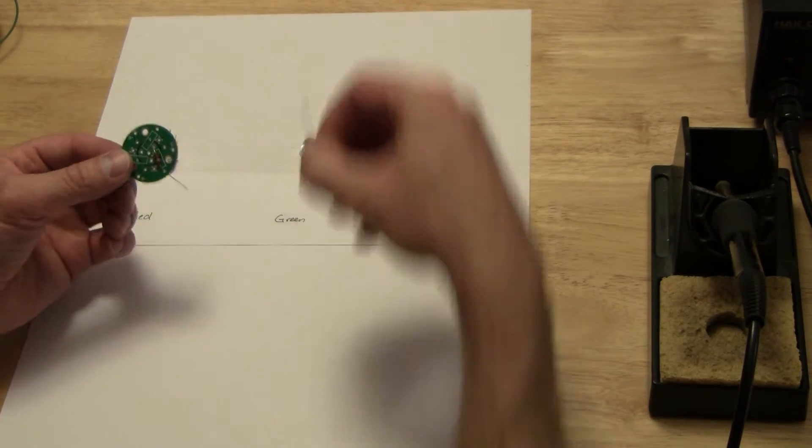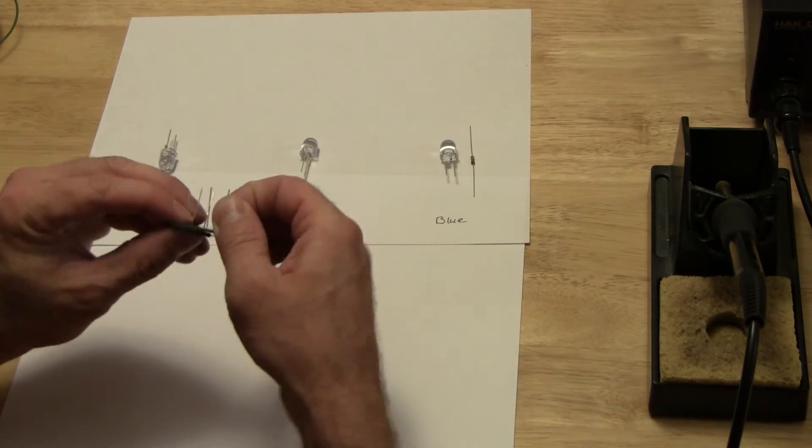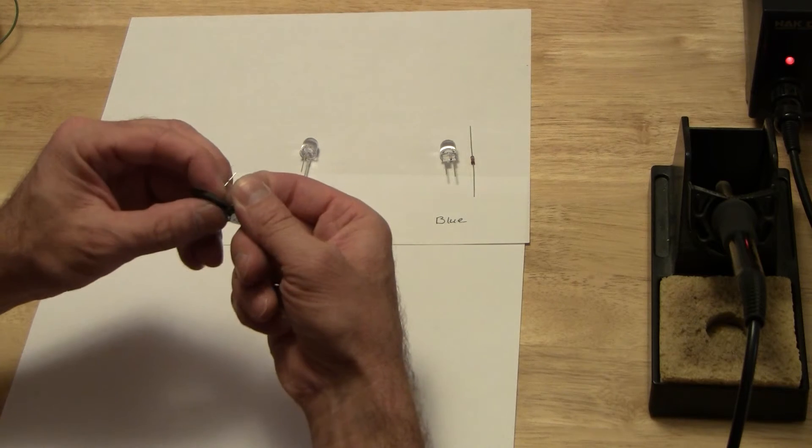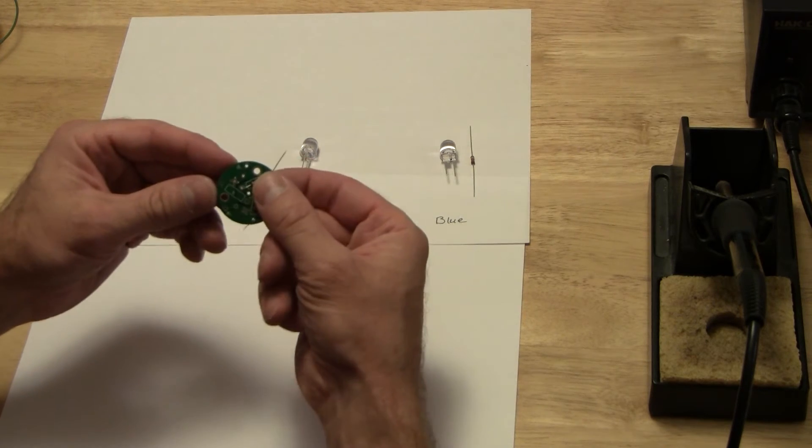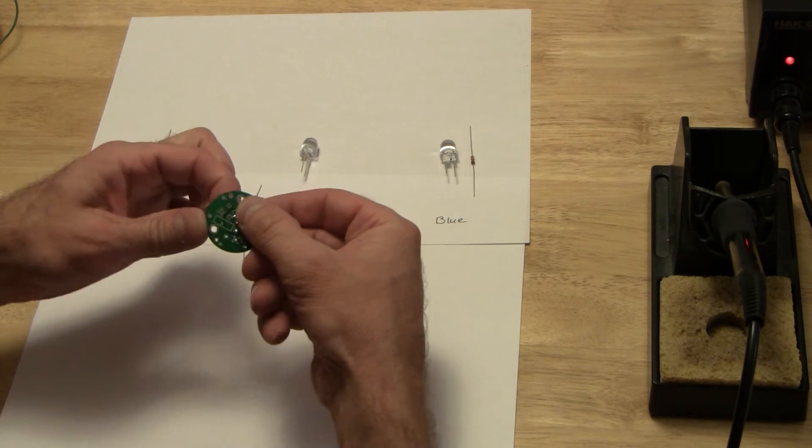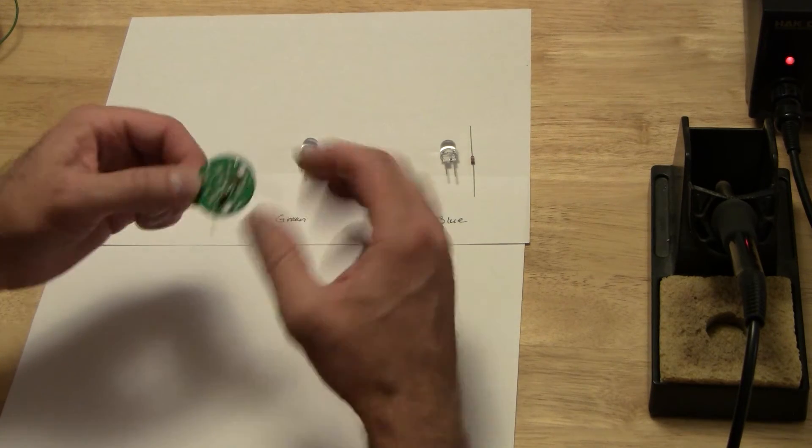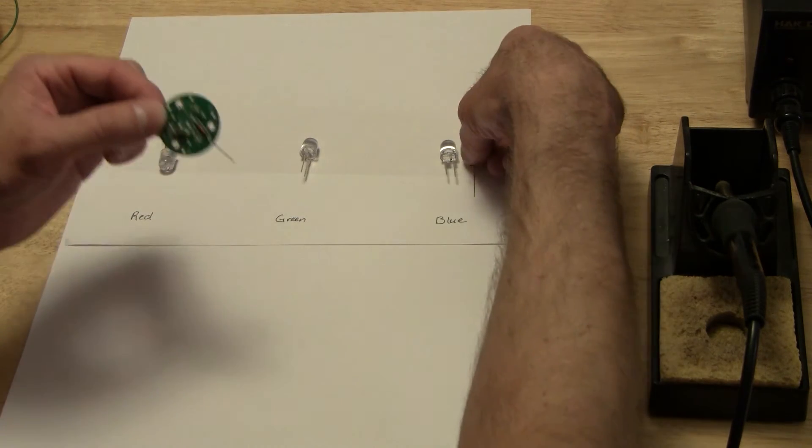And then the green. It's usually a good idea to bend them a little bit on the far side too, so that the resistor doesn't pull back out while you're trying to solder it. So there's two of the resistors and finally the blue resistor.